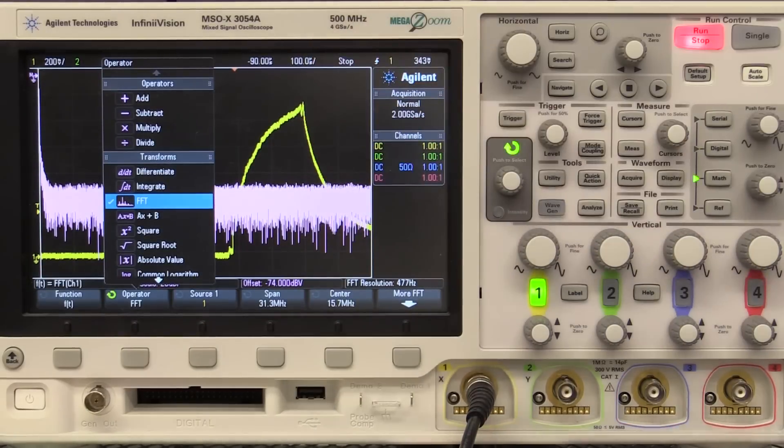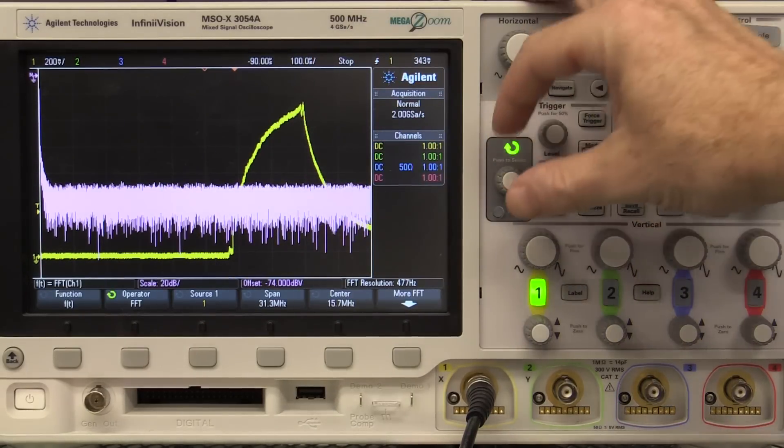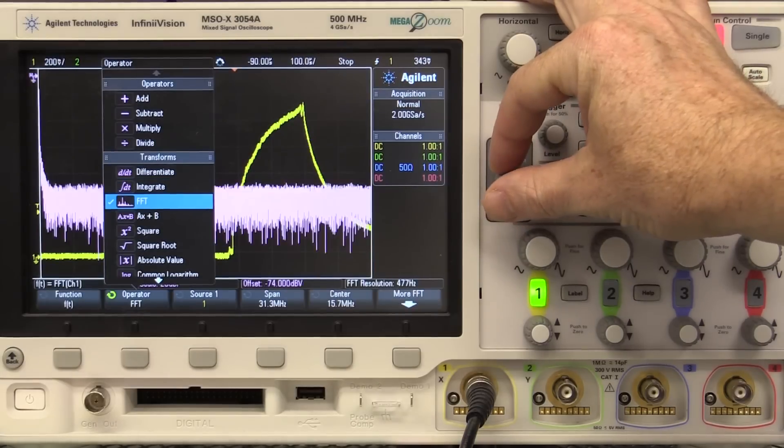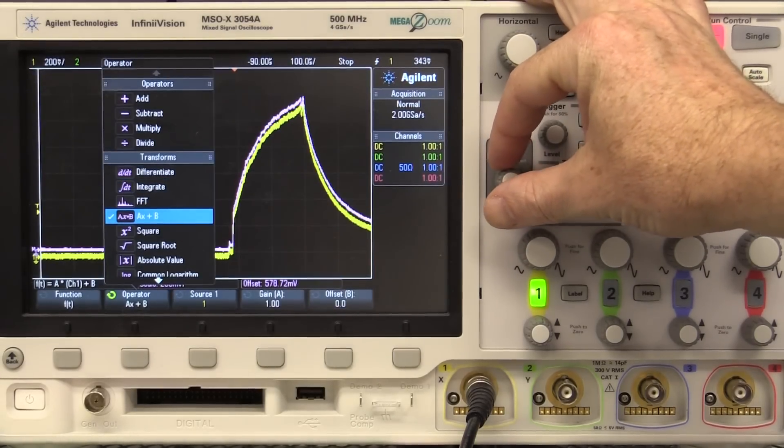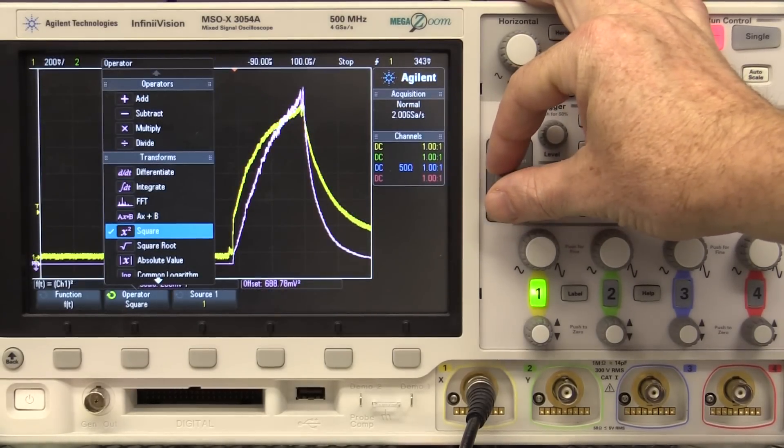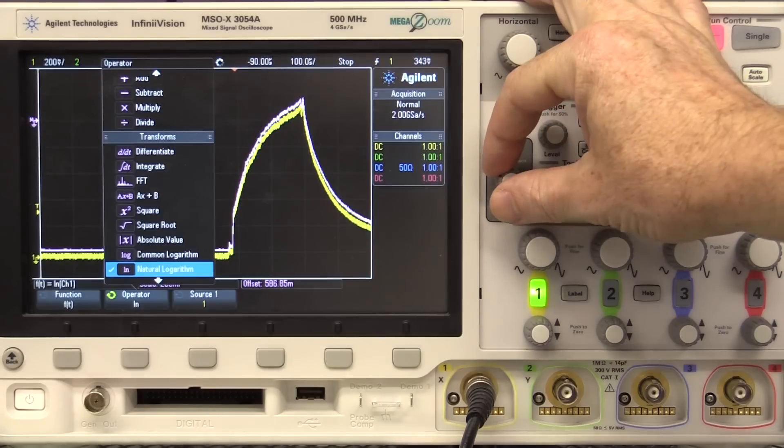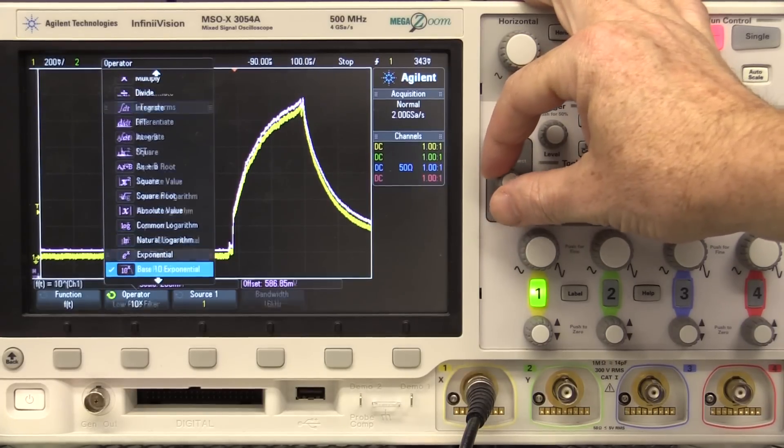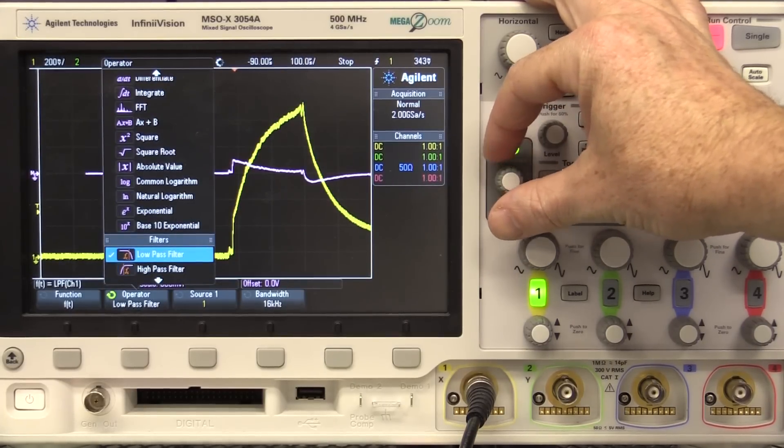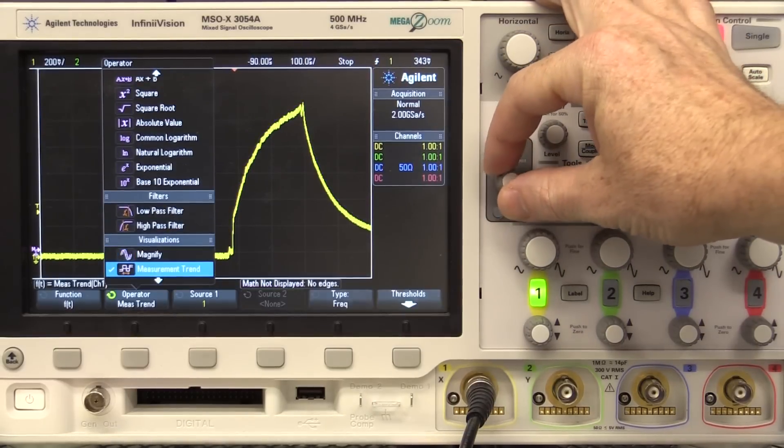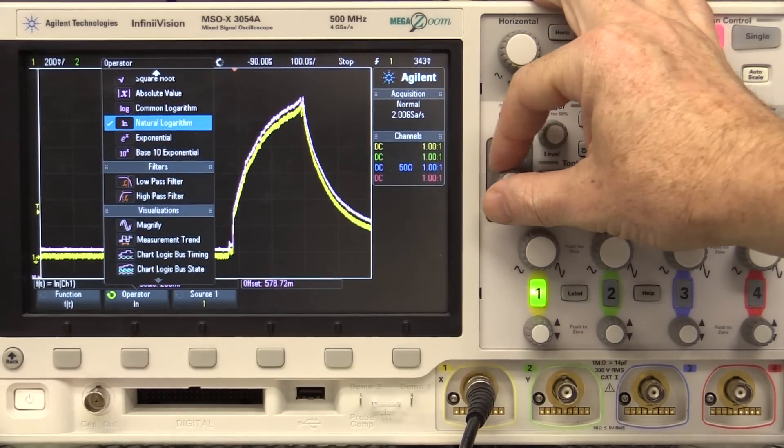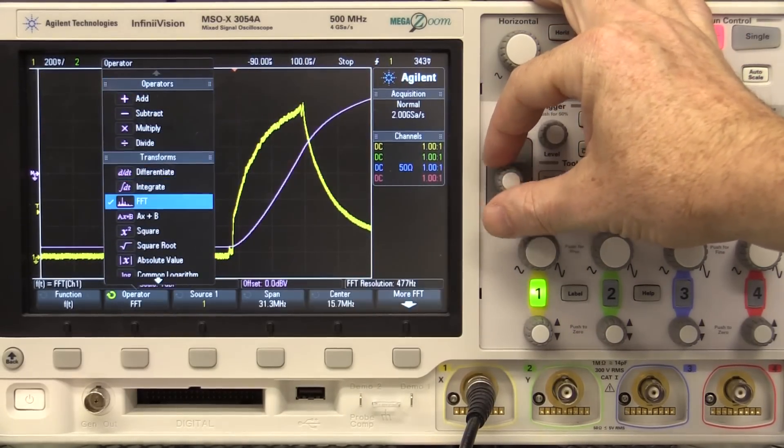We can do FFTs. You're likely familiar with FFTs to get the frequency domain of your signal, make it work like a spectrum analyzer. But we can square, square root, absolute value. We can do all sorts of logarithms, and we can even low-pass filter our signal, and do all sorts of weird and wonderful mathematical stuff.